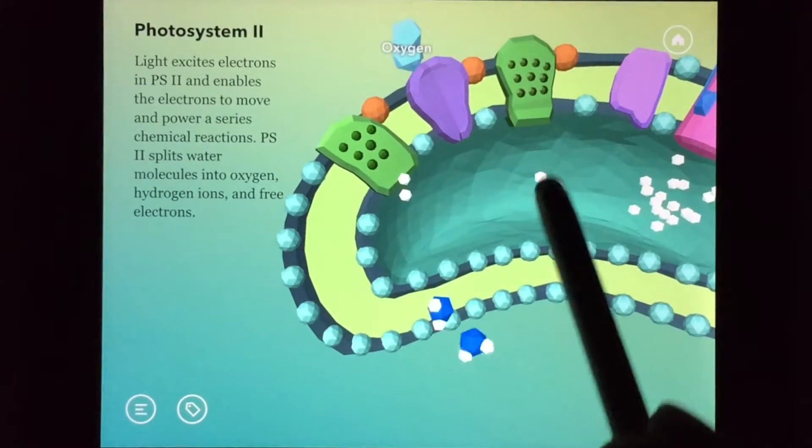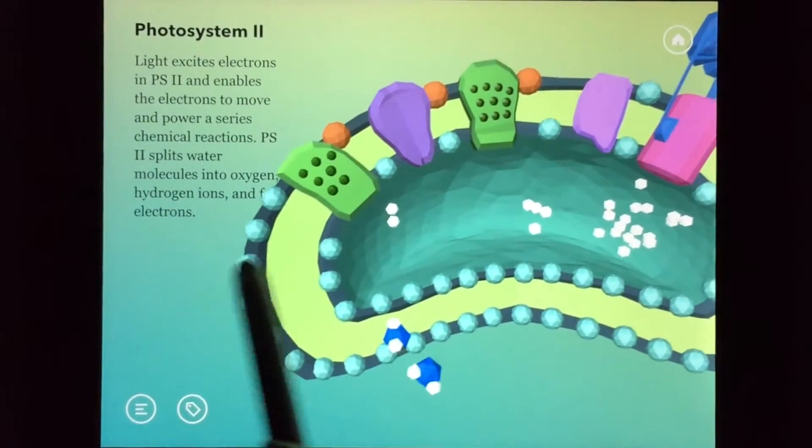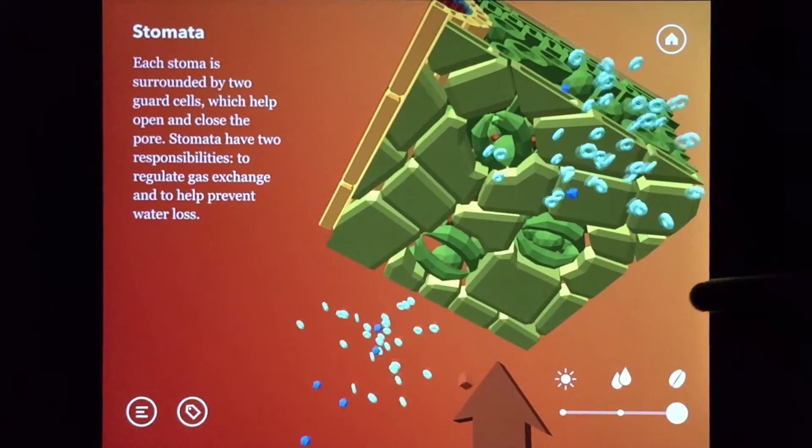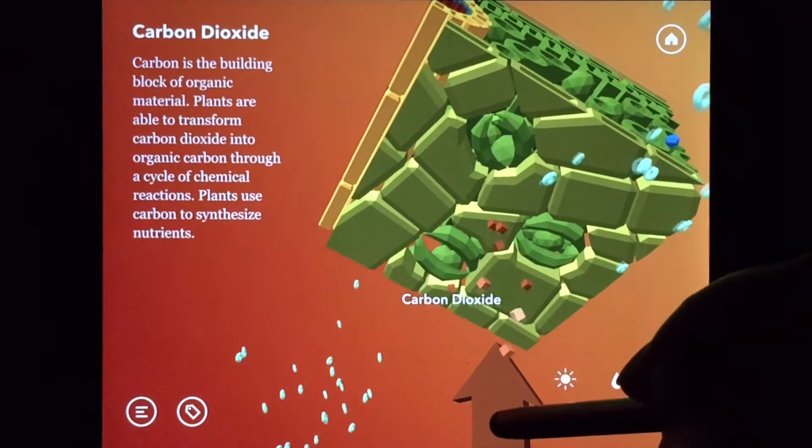As you can see here, oxygen gas is created after the water molecules are broken into pieces. Oxygen is then released through the stomata of a leaf as a waste product.